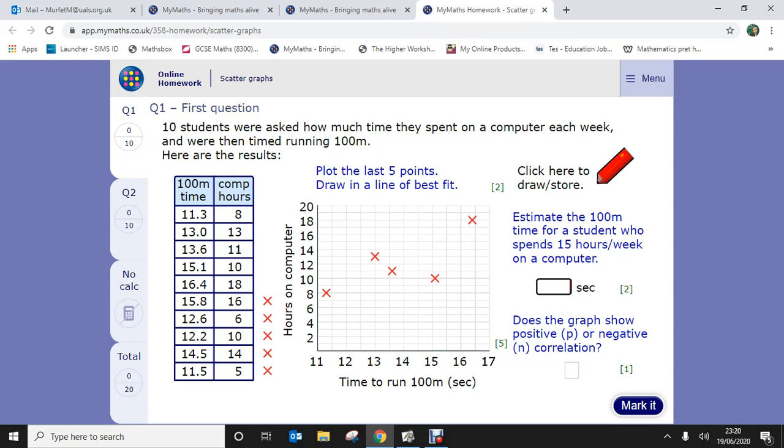Okay, so I'm going to go through the scatter graph homework I've set for Year 8. Initially, the first question says 10 students were asked how much time they spend on the computer each week and their time running 100 meters. The results are listed here. The first five results have been plotted for you.